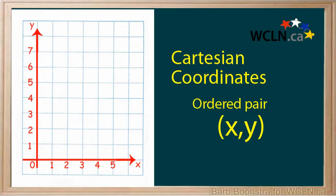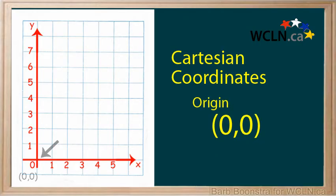An ordered pair is a pair of numbers in a special order. The numbers are separated by a comma, and parentheses or brackets are put around the whole thing. The point (0, 0) is given a special name: the origin.